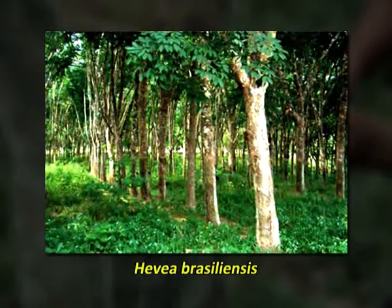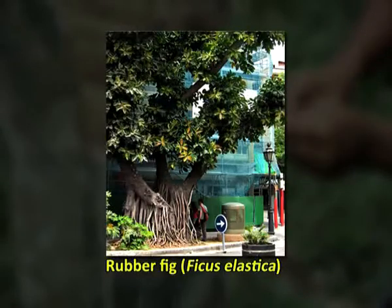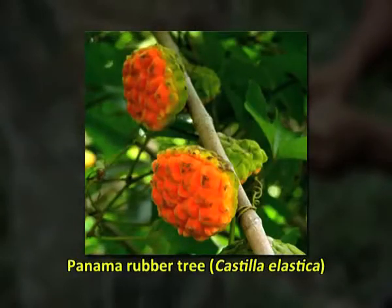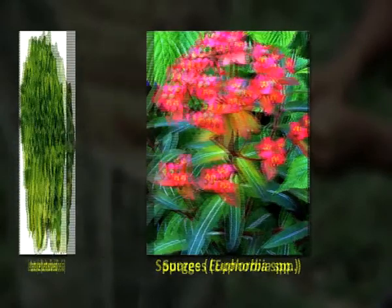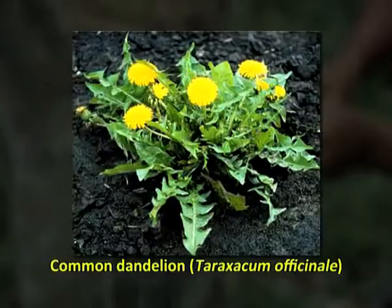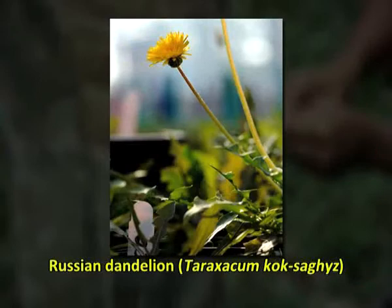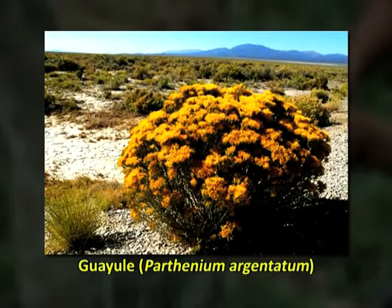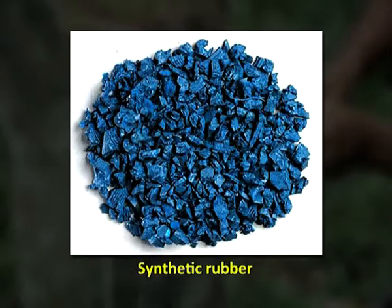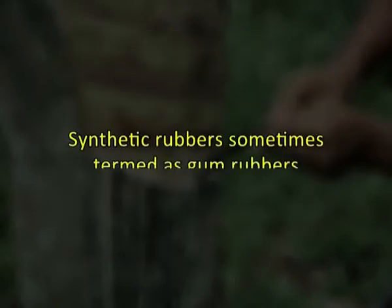The commercial source of natural rubber is the para rubber tree, Hevea brasiliensis. Other plants containing latex include Gutta-percha, Palaquium gutta, rubber fig Ficus elastica, Panama rubber tree Castilla elastica, Euphorbia species, common dandelion Taraxacum officinale, Russian dandelion Taraxacum kok-saghyz, and guayule Parthenium argentatum. Although these have not been the major sources of rubber, Germany attempted to use some of these rubber plants during World War II when cut off from rubber supplies, later replaced by the development of synthetic rubbers.